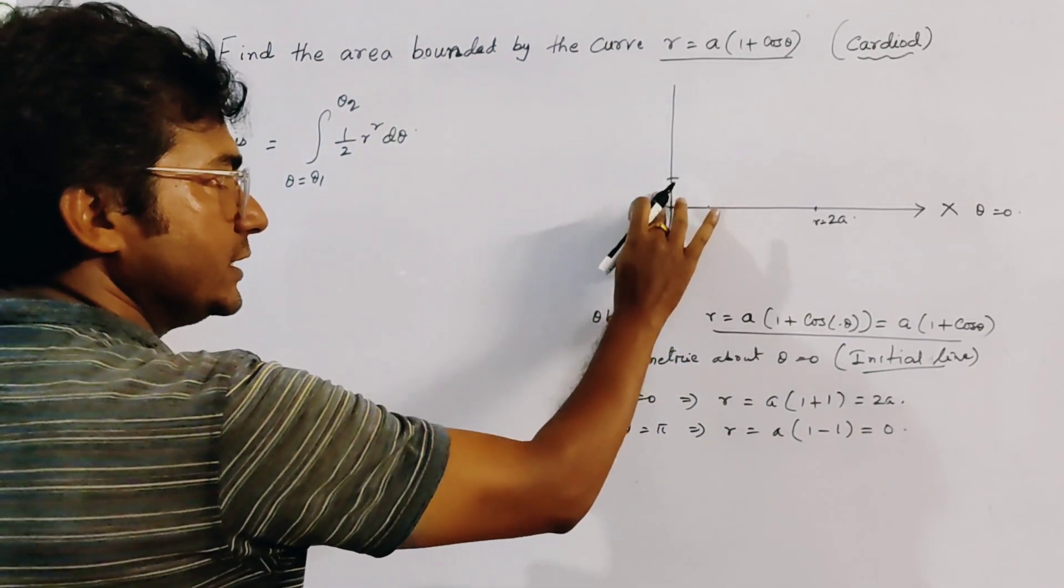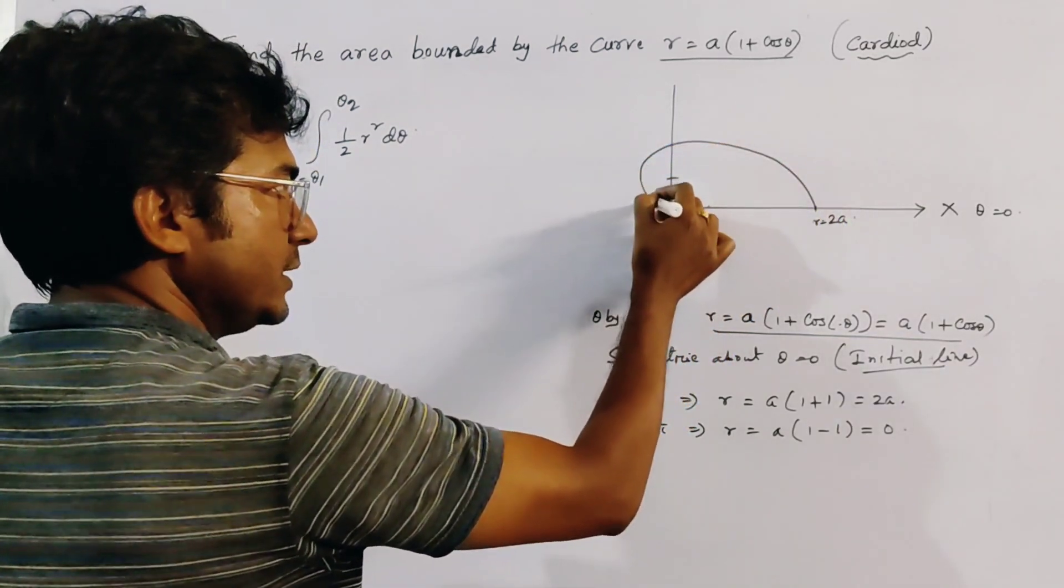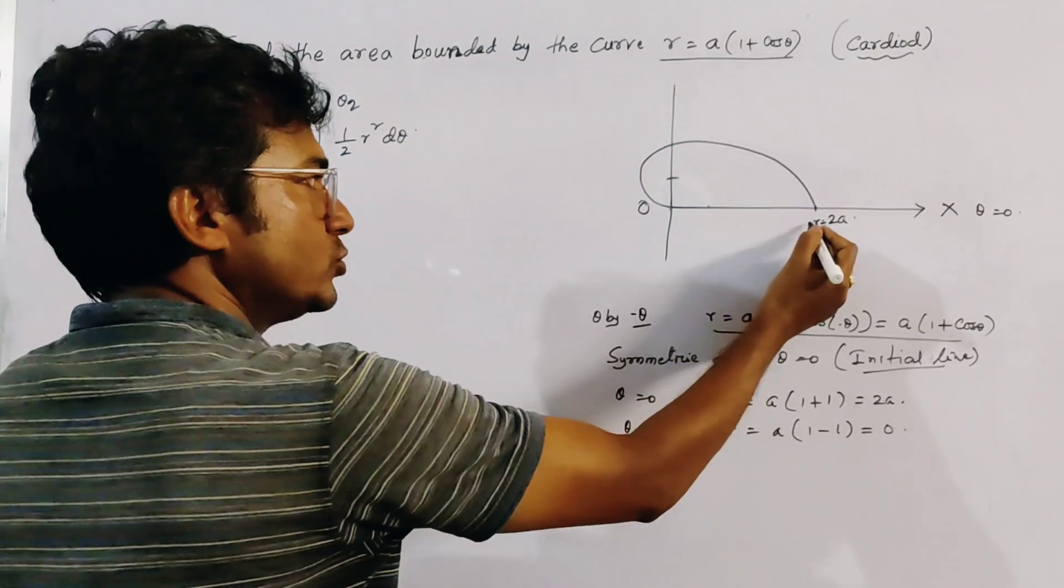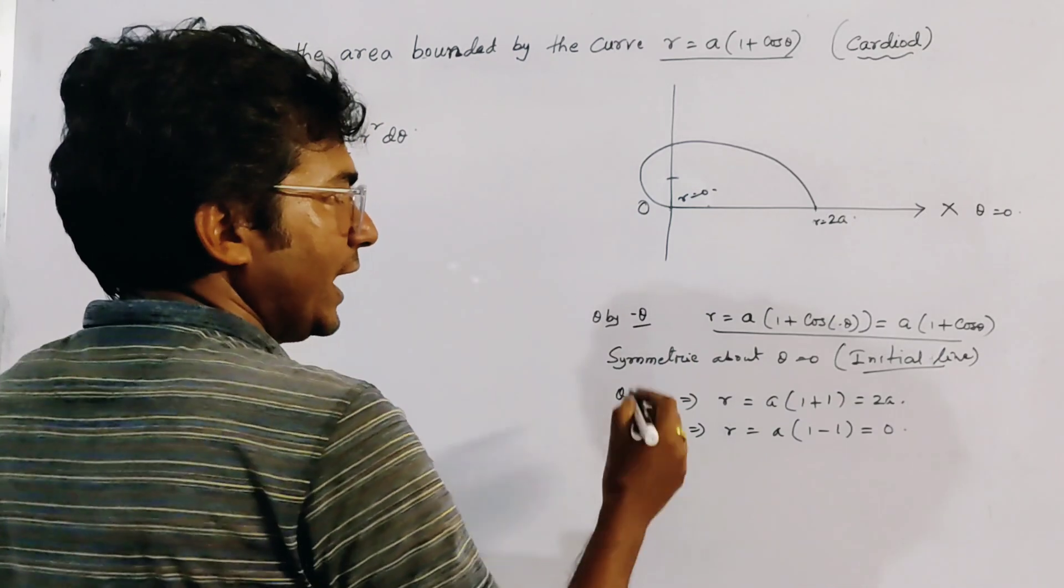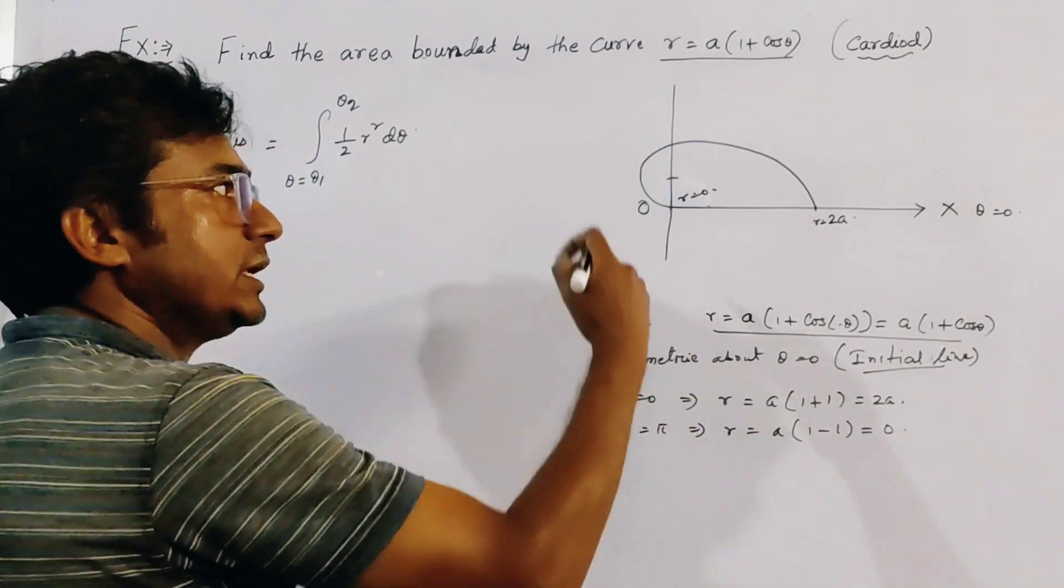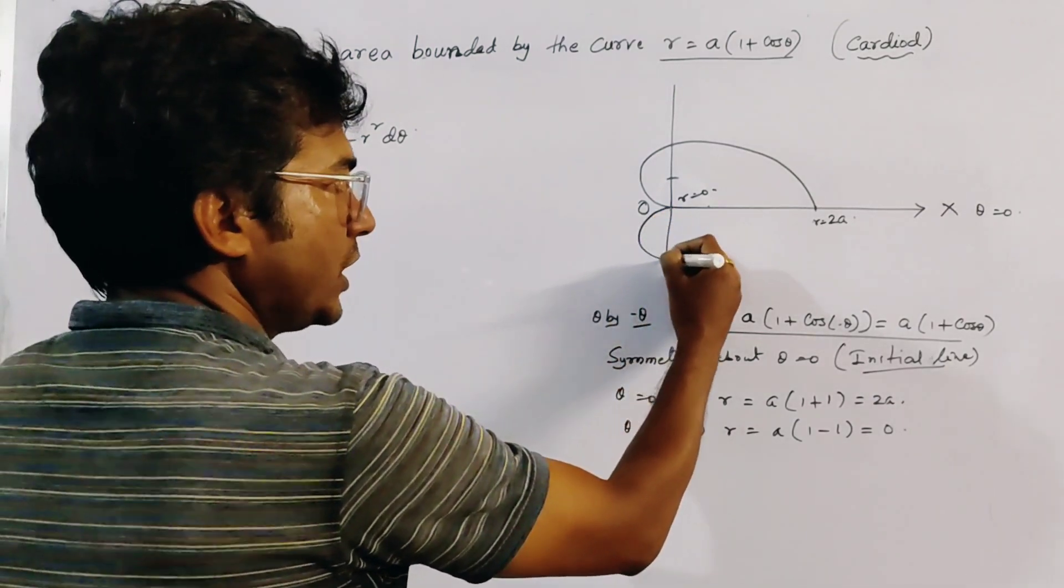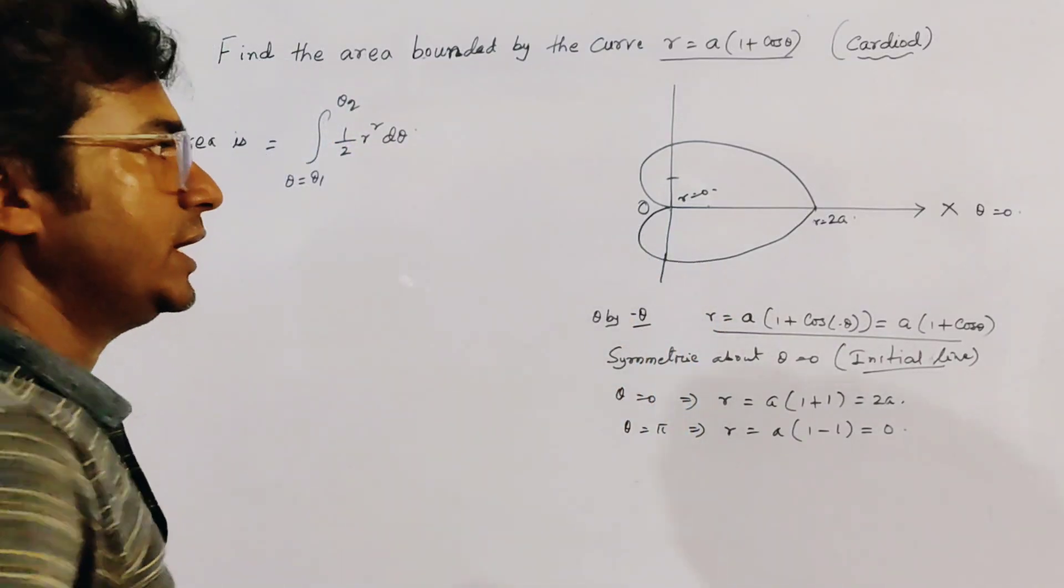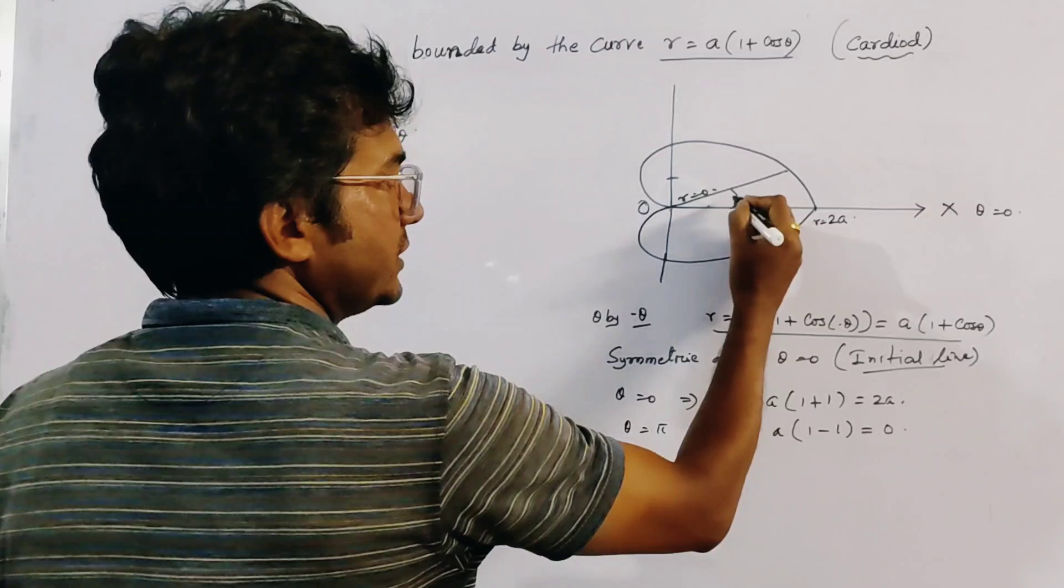So clearly the picture looks like this type, from R equal to 2A to R equal to 0 here. And the lower portion of the picture looks like the above portion. So the other part of the picture is this. This is the complete period, and this angle is theta.